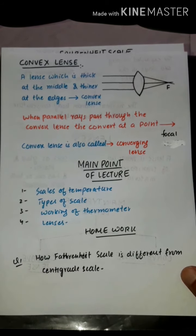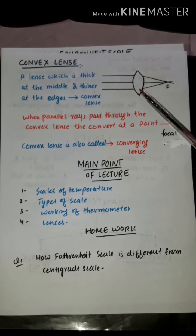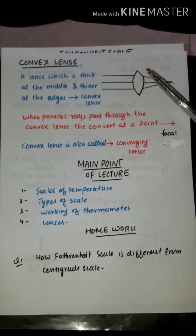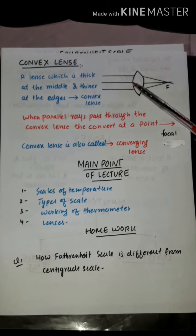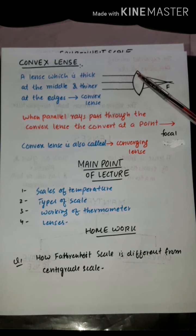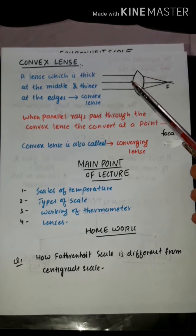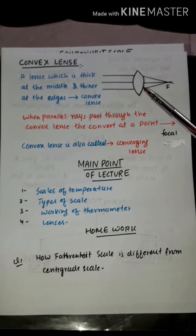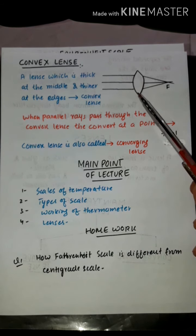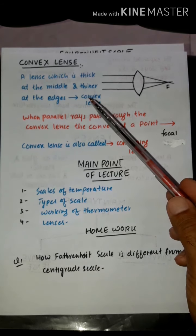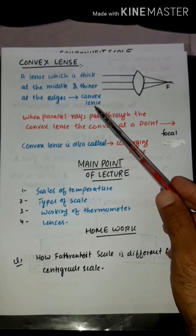What is a convex lens? As you can see in the figure, in a convex lens the middle region is thicker and the edge region is thinner. A lens which is thick at the middle and thinner at the edges is called a convex lens.